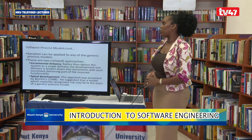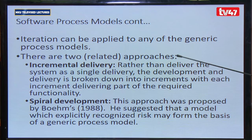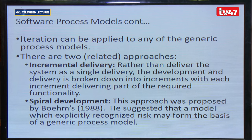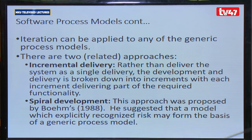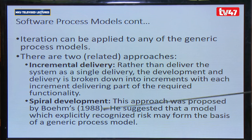When using software process models, two additional approaches are incremental delivery and spiral development. Spiral development was proposed by Boehm in 1988 and suggested a model that explicitly recognizes risks as the basis of the generic process model. It is important to prepare for risks, as software engineering is a project like any other.